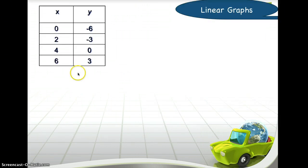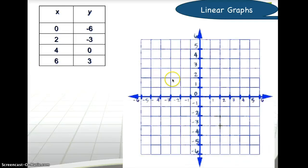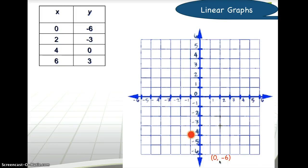Now you're given a function table or input/output table. What we need to learn here is how to graph. I'm going to put up the coordinate plane — you have your x-axis and your y-axis. The first coordinate is zero and negative six, where zero is the x-coordinate and negative six is the y-coordinate.